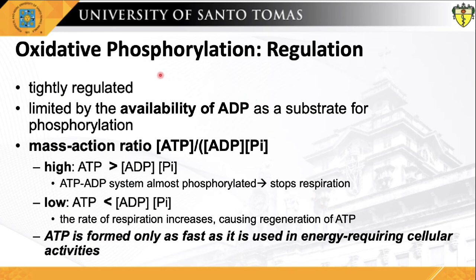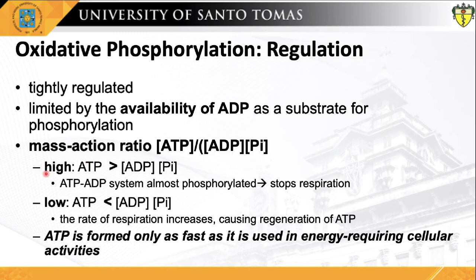Oxidative phosphorylation is a highly crucial process that needs to be finely regulated. The rate of respiration, or oxygen consumption in the mitochondria, is tightly regulated, generally limited by the availability of ADP as a substrate for phosphorylation. The intracellular concentration of ADP is one measure of the energy status of cells. Another related measure is the mass action ratio of the ATP-ADP system — ATP concentration over the product of ADP and inorganic phosphate concentrations. Normally, this ratio is very high, so the ATP-ADP system is almost fully phosphorylated.